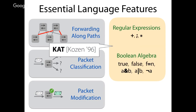This combination of boolean algebra with regular expressions is not new — it's been studied for about two decades. It was introduced in 1996 by Dexter Kozen and is called Kleene Algebra with Tests (KAT). Much of the theoretical foundation NetKAT exploits comes from KAT, which has been studied extensively. Finally, there's one more language feature needed: packet modifications. Sometimes we want to rewrite packet fields, such as an IP address or MAC address.